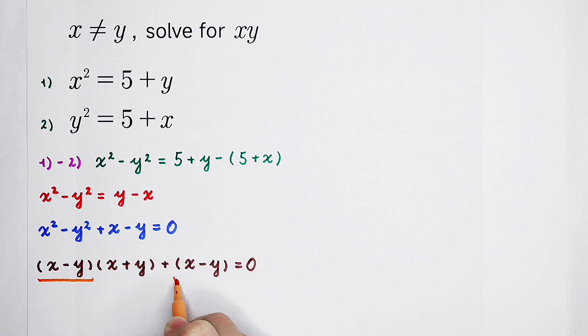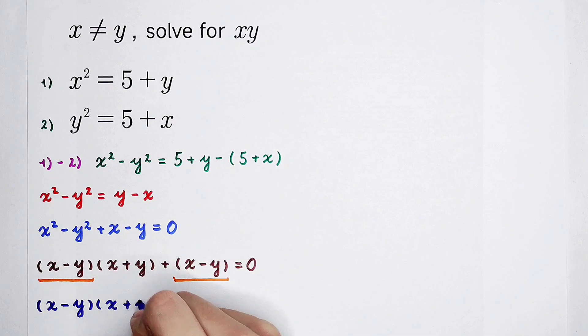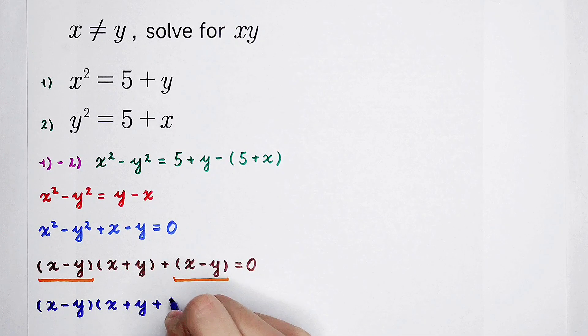x minus y, x minus y. And we can take it out. So, it will be x minus y times x plus y plus 1 equals 0.